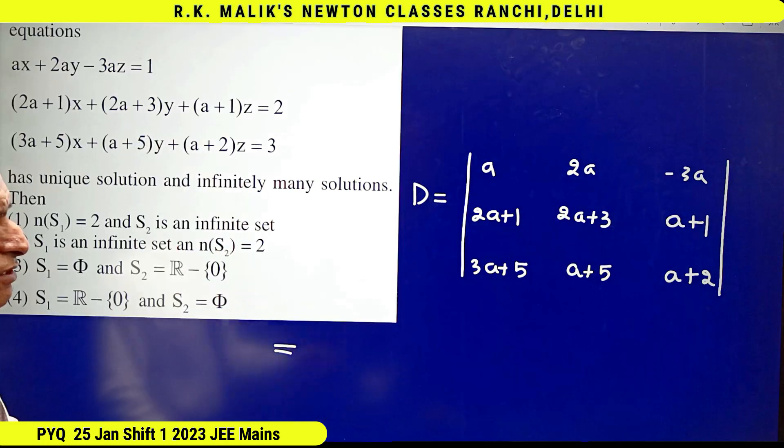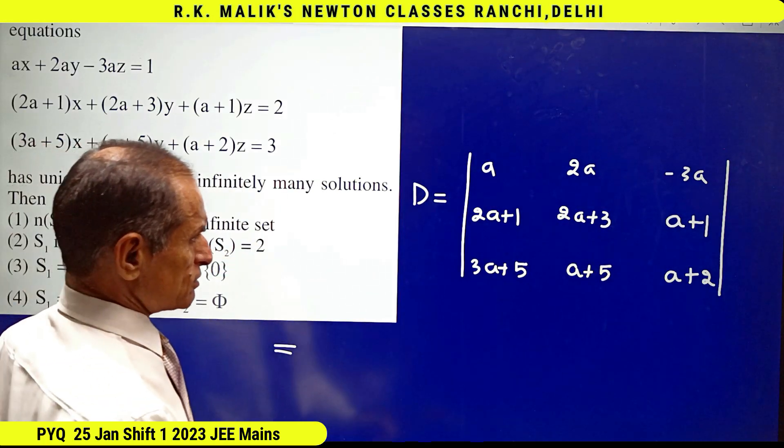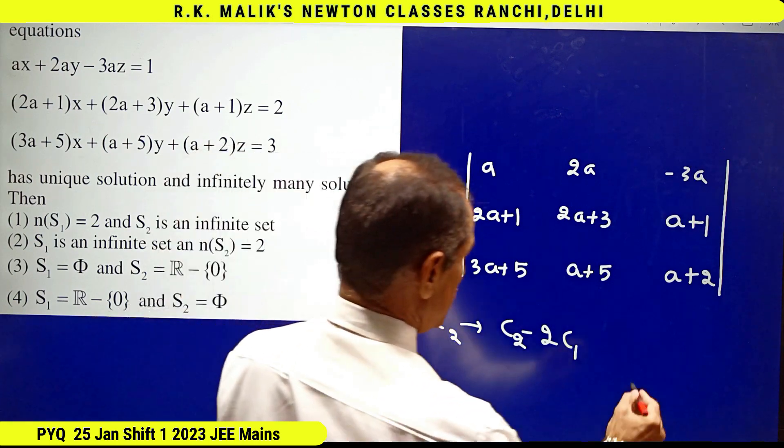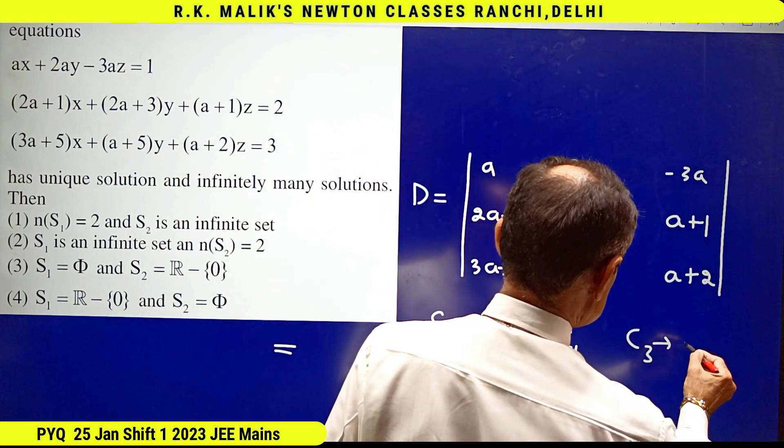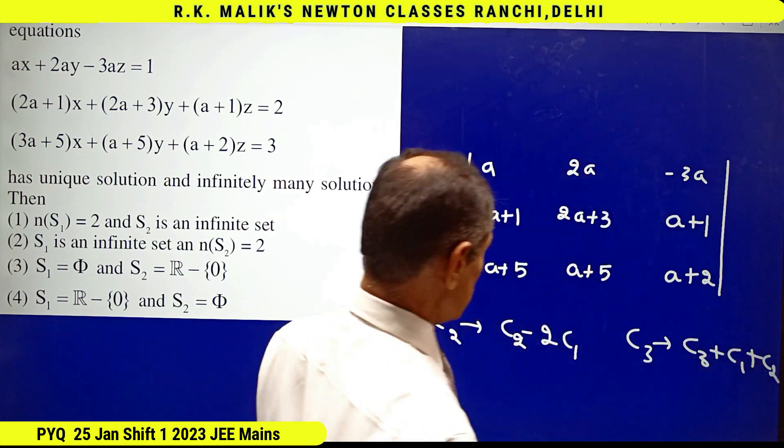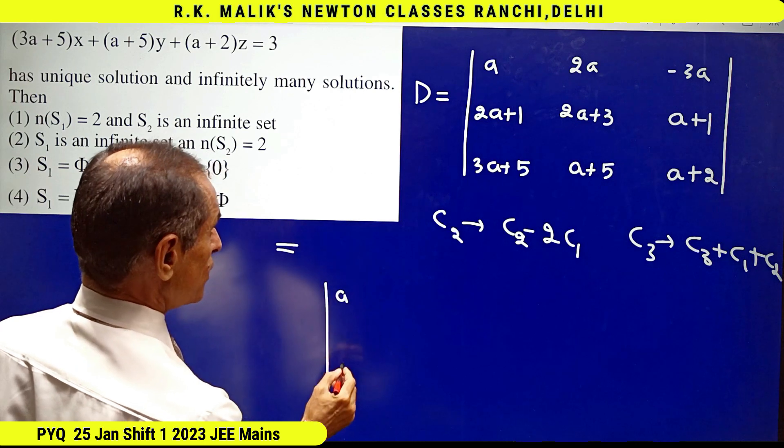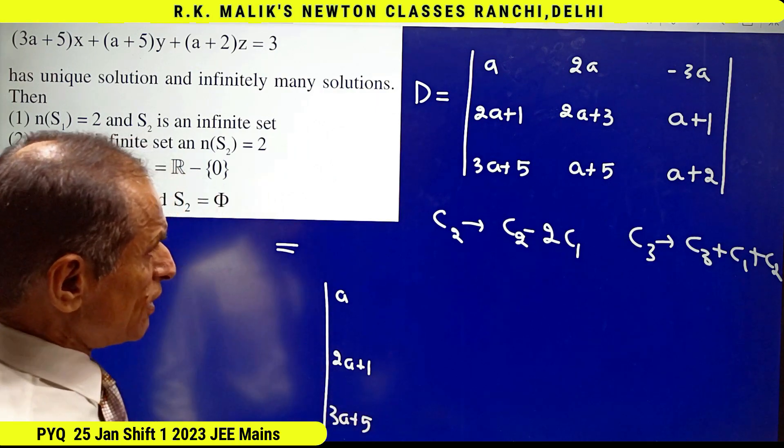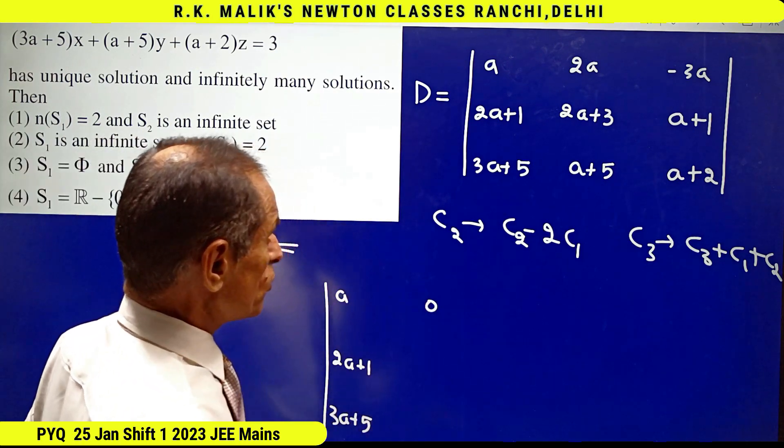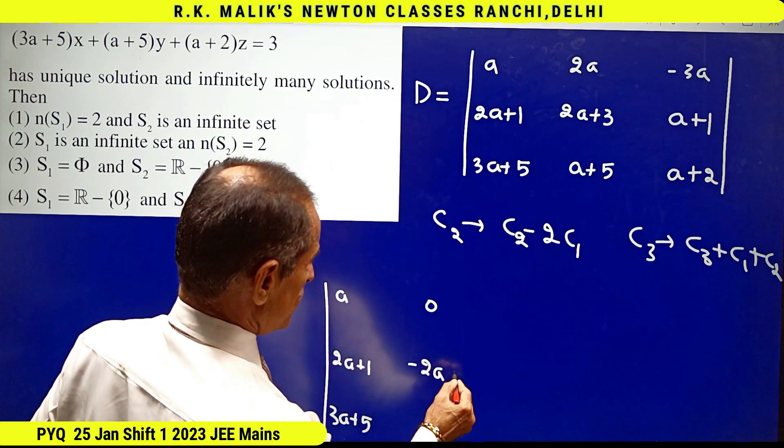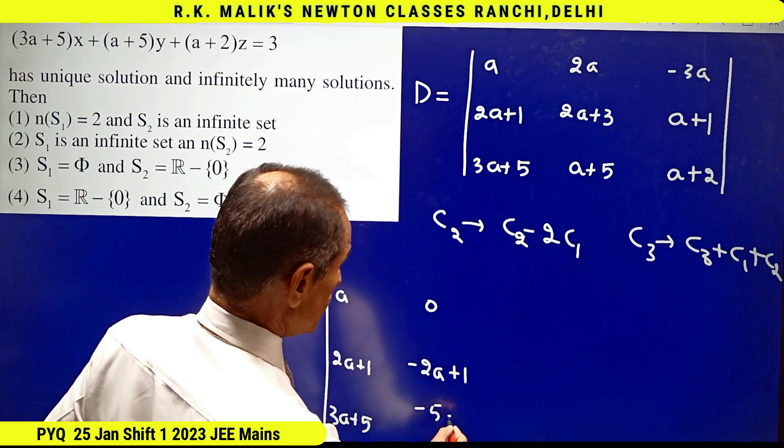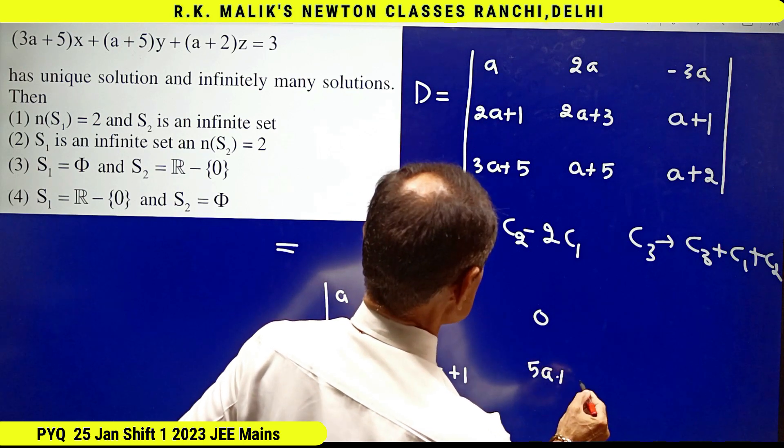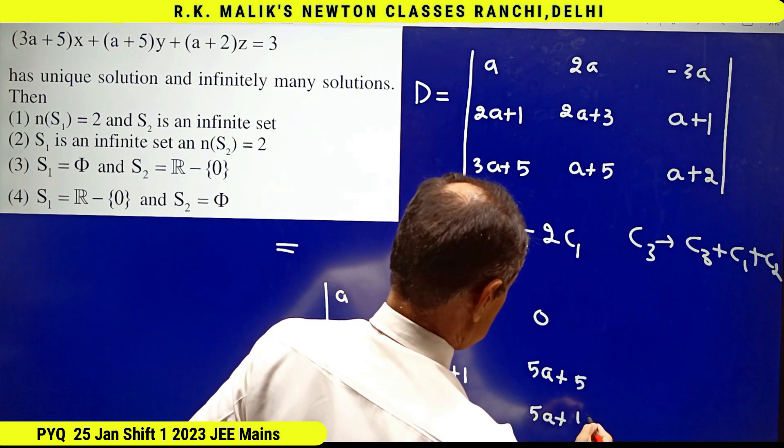First I simplify this. To evaluate it, I use the properties: c₂ changes to c₂ minus 2c₁, and c₃ changes to c₃ plus c₁ plus c₂. I will be getting: a, 2a+1, 3a+5; 0, minus 2a+1, minus 5a minus 5; and 0, 5a+5, 5a+12.